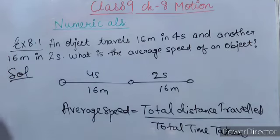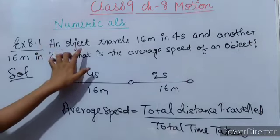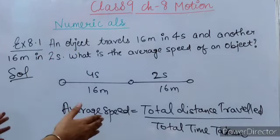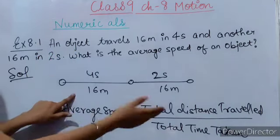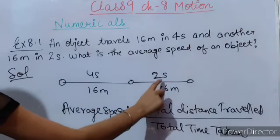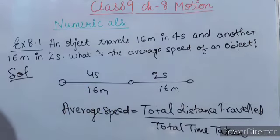We have said that an object travels 16 meters in 4 seconds and then another 16 meters in 2 seconds. What is the average speed of the object?